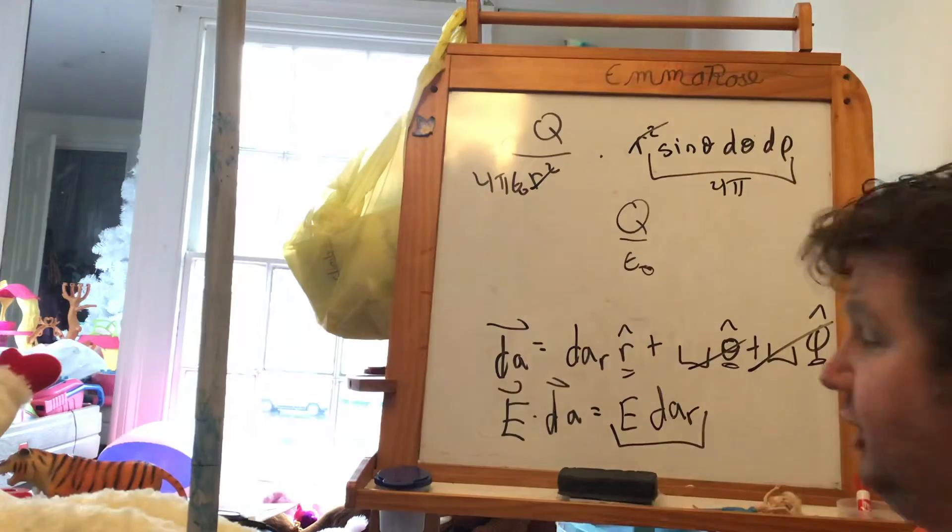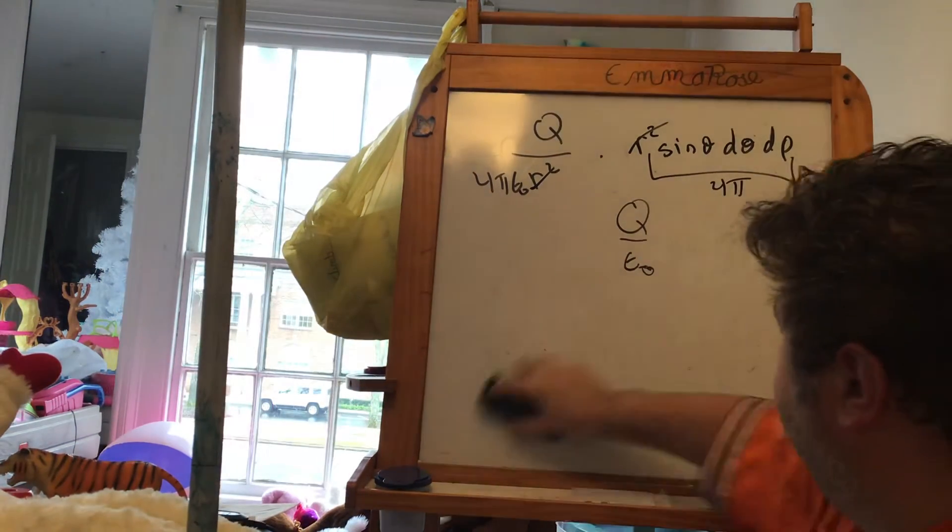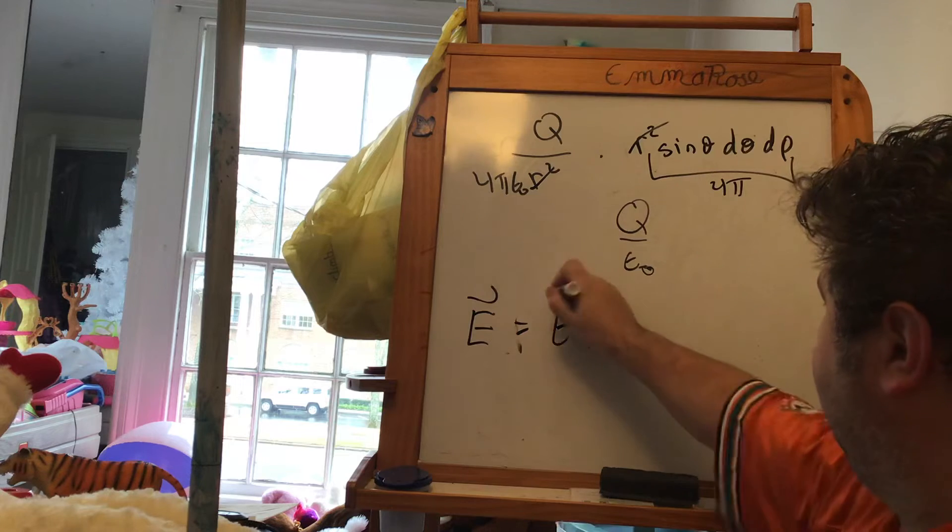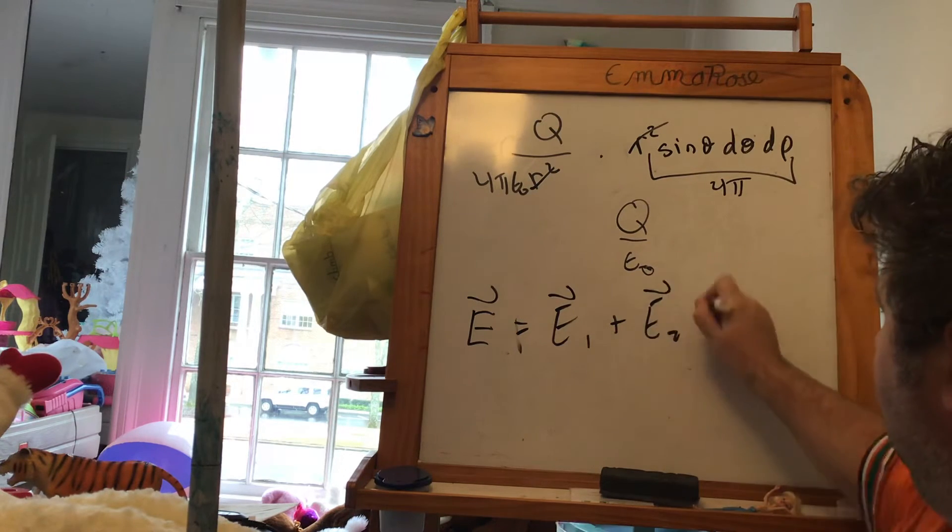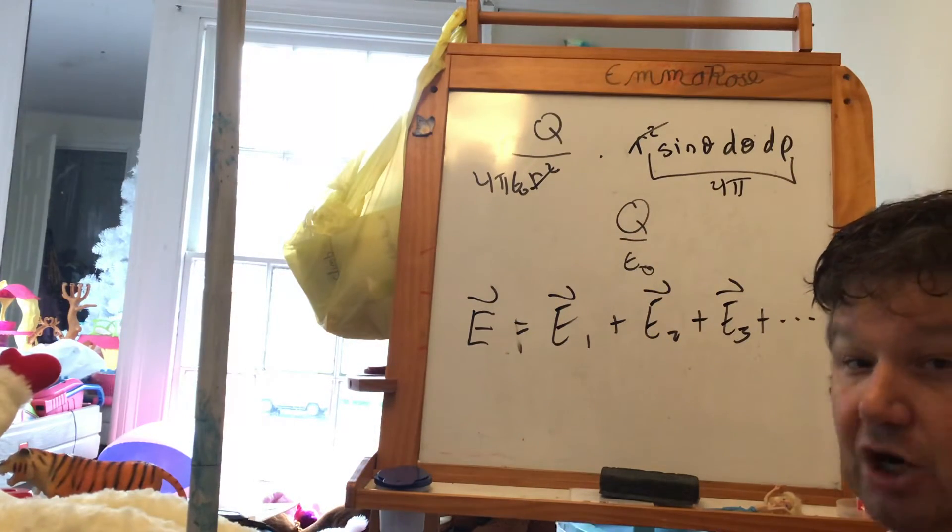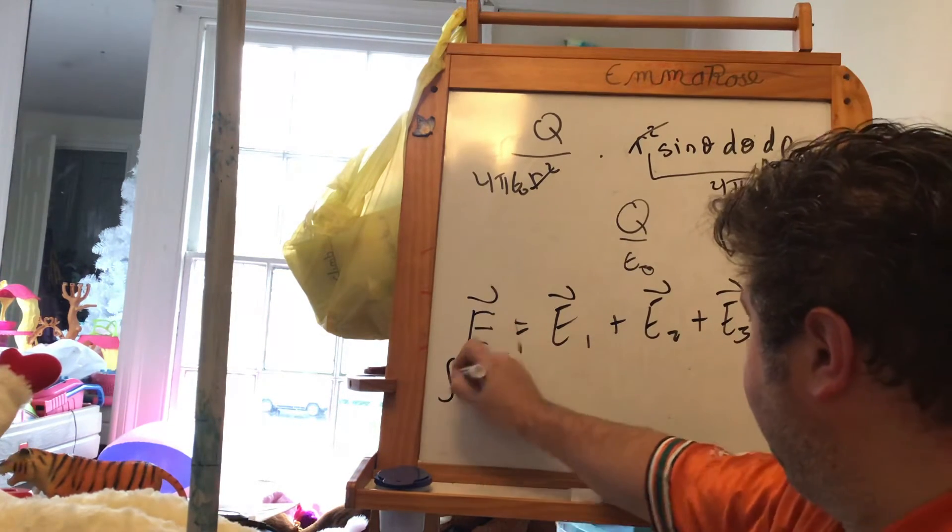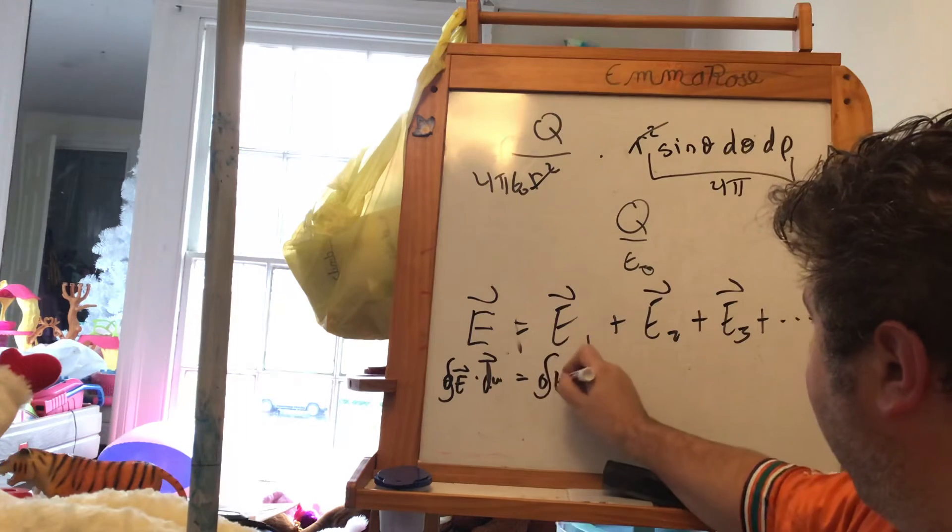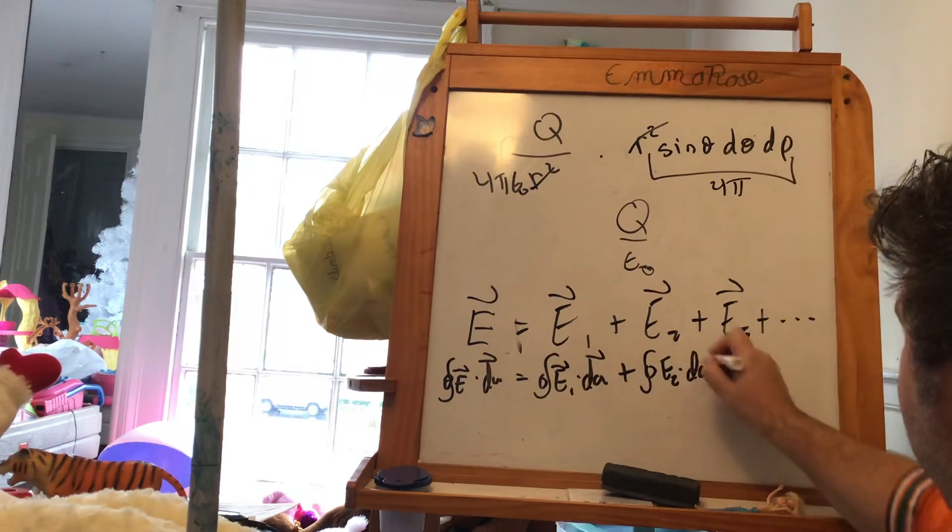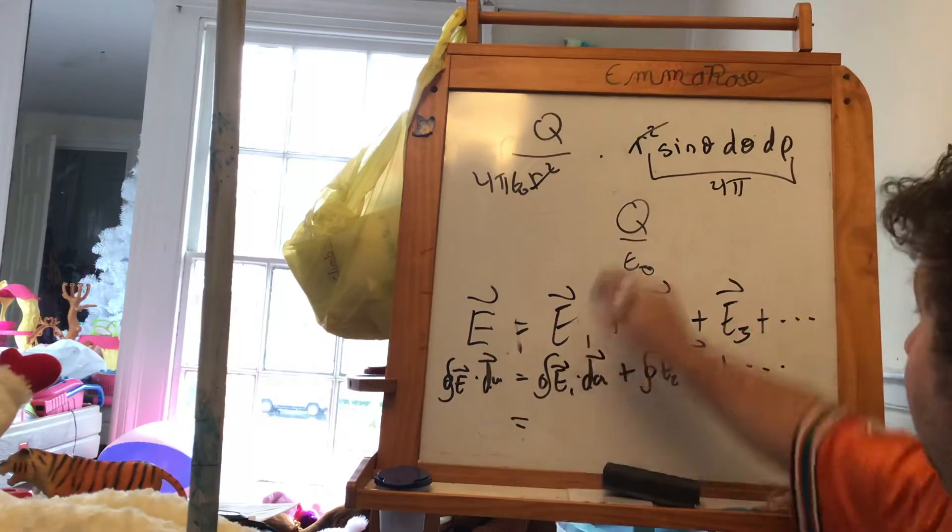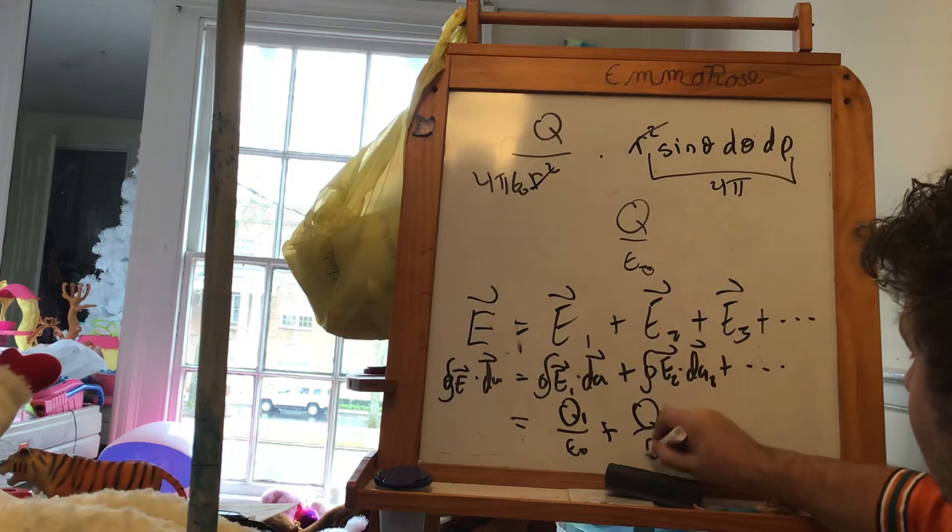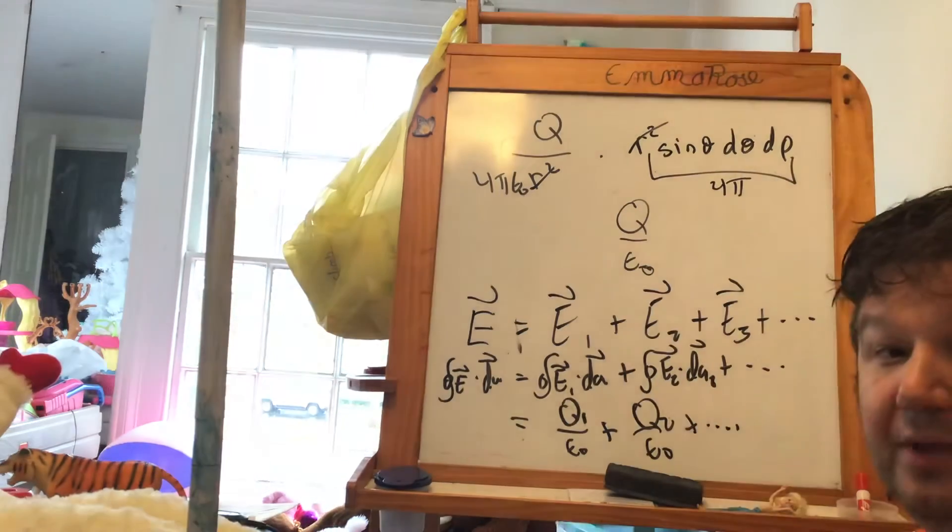I always just get that charge over epsilon nought when I integrate the E·dA over the outside of the surface. Of course, if I can do that for one charge, and I know that my whole electric field is given by just the sum of all of these electric fields, each due to a point charge, and I integrate dot dA, and I integrate here E1 dot dA plus E2 dot dA plus dot dot dot, this is just going to give me q1 over epsilon nought plus that integral is going to give me q2 over epsilon nought and so on.